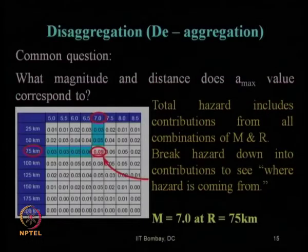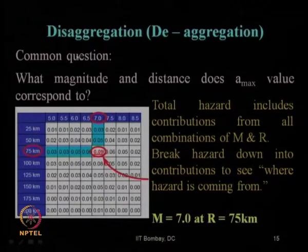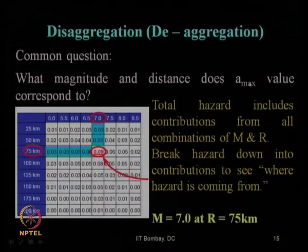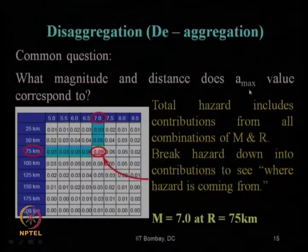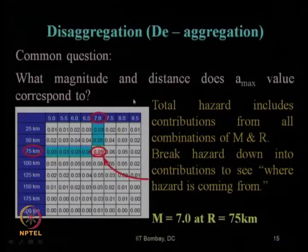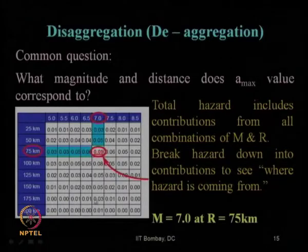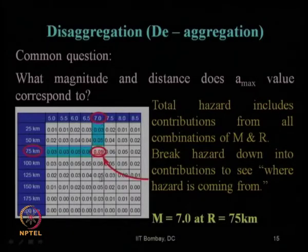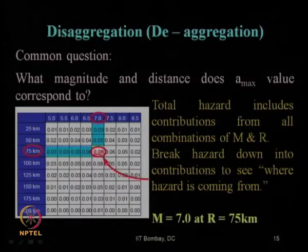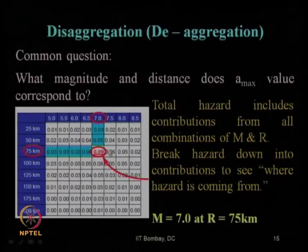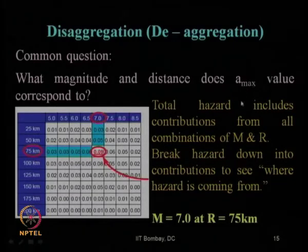We also discussed disaggregation, or de-aggregation. If we want to know which particular magnitude and distance contribute most to the obtained hazard value, we go back to the grid of individual probabilities and identify the cell with the maximum value. For example, in a given grid, the maximum value might occur at M=7 and r=75km, identifying the most influential magnitude-distance pair.